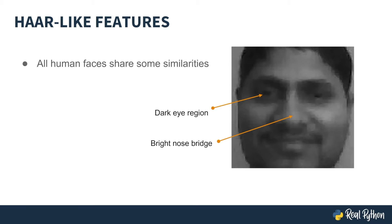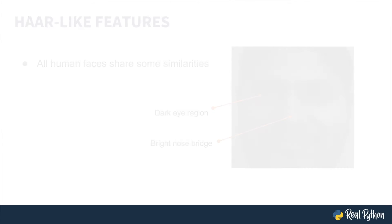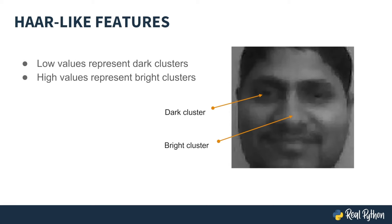We can use these common properties to help us determine if an image contains facial features, and ultimately, a face. A simple way to determine how bright or dark a portion of an image is is to first convert it to grayscale, and then add up the values of all the pixels within that portion. Remember, lower values represent a darker pixel, while higher ones represent a brighter pixel.